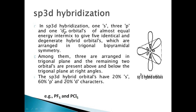SP3D hybridization involves one S orbital, three P orbitals, and one D orbital — specifically the dz-squared orbital — which intermix to give five identical and degenerate hybrid orbitals. These are arranged in trigonal bipyramidal symmetry, with three orbitals in the trigonal plane and two orbitals above and below the trigonal plane at right angles.